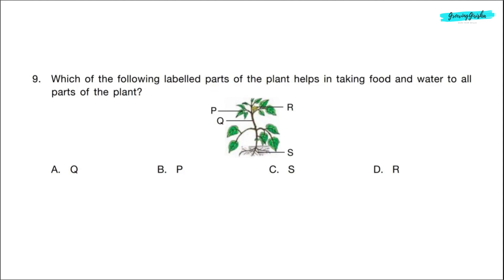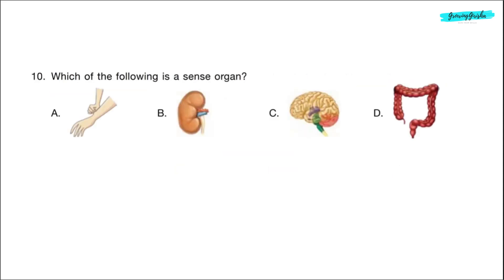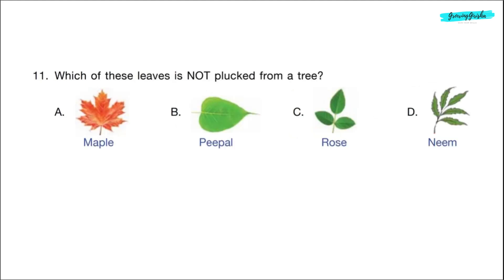Question 9. Which of the following labeled parts of the plant helps in taking food and water to all parts of the plant? Correct answer is option A. Stem labeled as Q. Question 10. Which of the following is a sense organ? Correct answer is option A, skin. It helps us to feel. Question 11. Which of these leaves is not plucked from a tree? Correct answer is option C. Rose is not a tree. It is a plant.